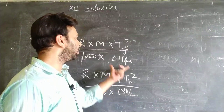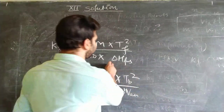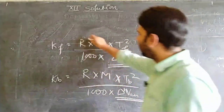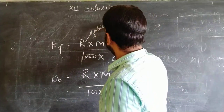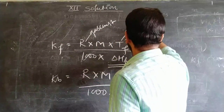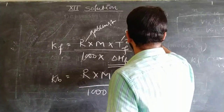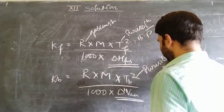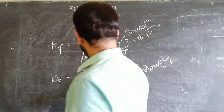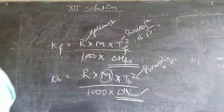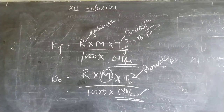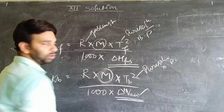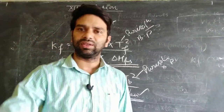ΔH_vaporization is the latent heat of vaporization and ΔH_fusion is the latent heat of fusion — concepts you studied in Class 9. R is the gas constant, Tf and Tb are the boiling points of the pure solvent, and M is the molar mass. From these formulas, you can determine all required values.